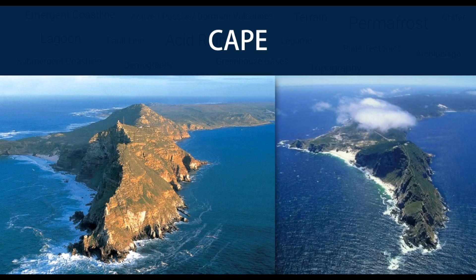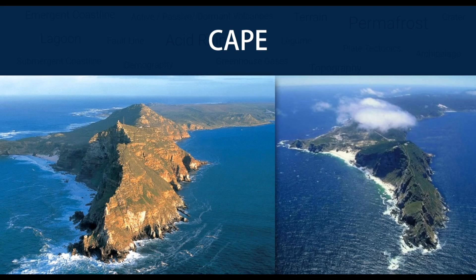A cape usually represents a marked change in the trend of the coastline. Their proximity to the coastline makes them prone to natural forms of erosion, mainly tidal actions. This results in capes having a relatively short geological span. Capes can be formed by glaciers, volcanoes and changes in sea level, with erosion playing a large role in each of these methods of formation.